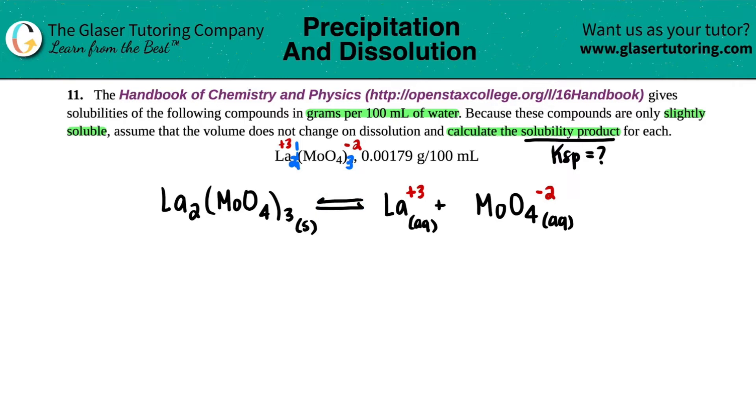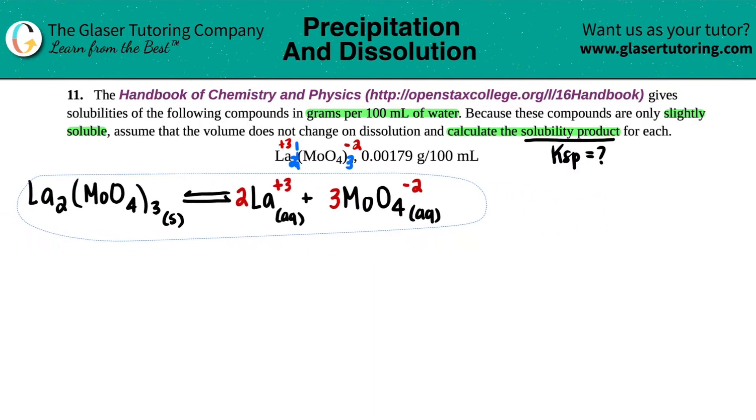Now we just have to make sure that this is balanced, right? But I have two Las. So I have to put a two in front of the La here. I have three MoO₄s. So I have to put a three in front of that polyatomic. And now we're good. So that's the first step.